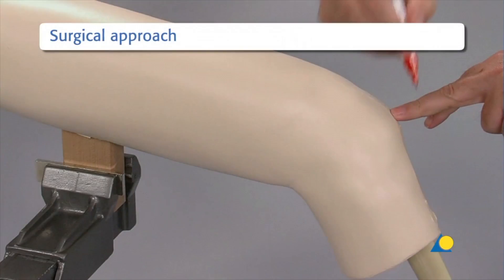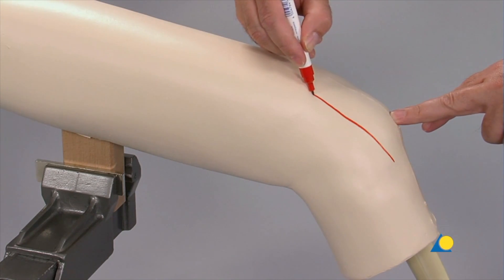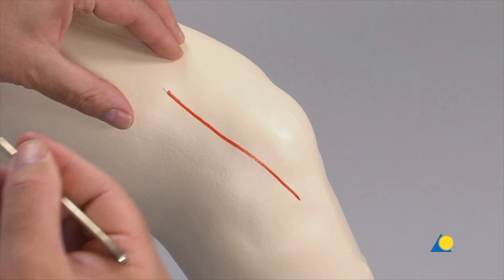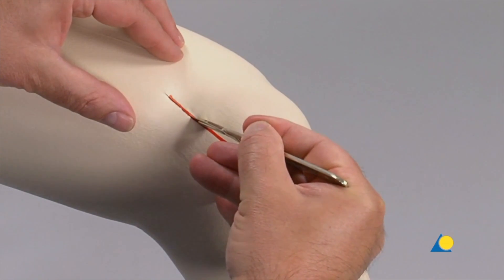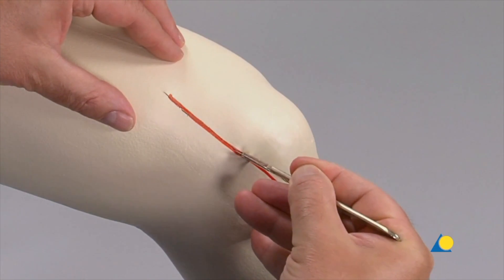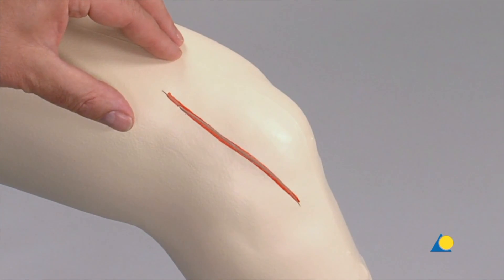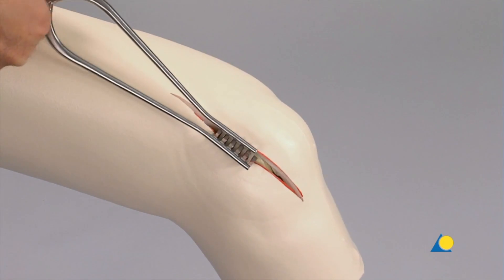In the presence of a complex intraarticular fracture, a 3-3-C2 or C3 fracture, a lateral parapatellar approach is made. An arthrotomy is performed to expose the joint for reduction. The patella is averted, and the incision is extended for adequate exposure of the joint for anatomical reduction and fixation. The soft tissue is held open with the spreader.